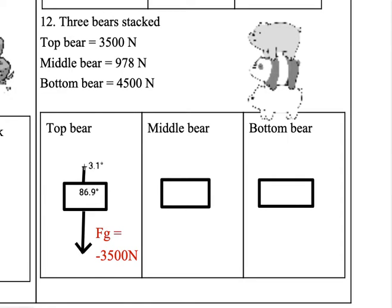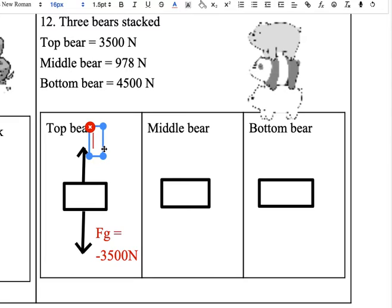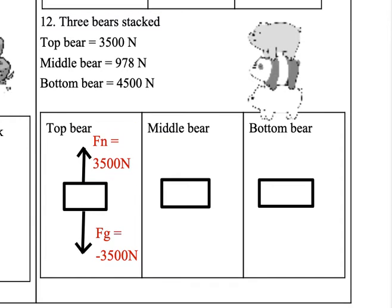So then our normal force, since top bear is at rest, is going to be equal to the positive sum of the forces that are pointing down. So Fn equals 3500 newtons. All right, so as soon as we get to middle bear...